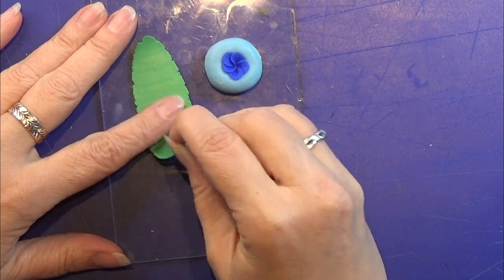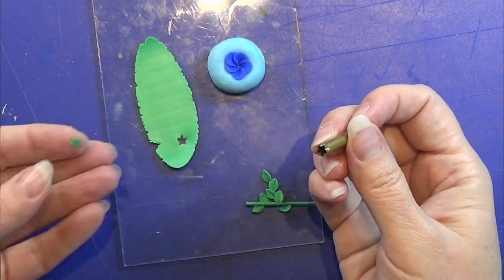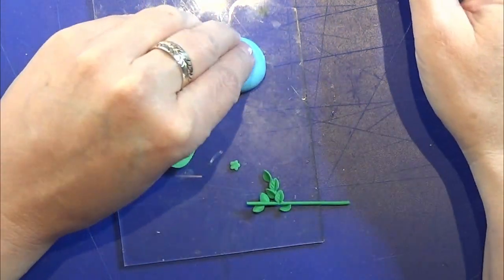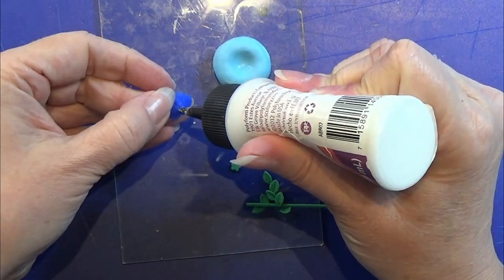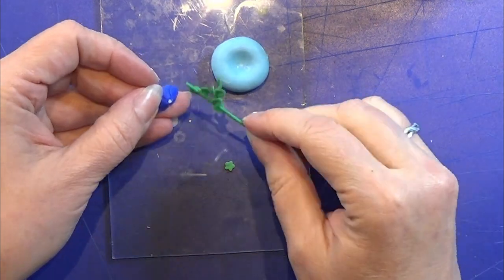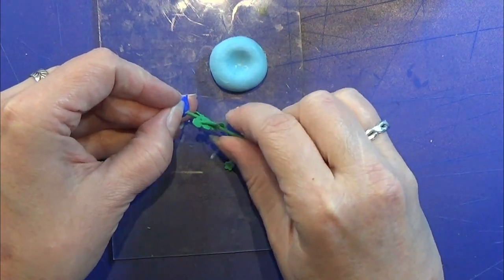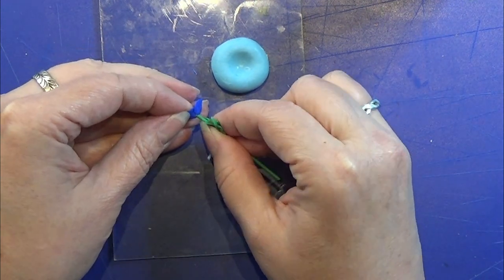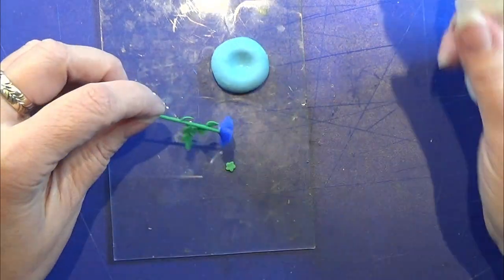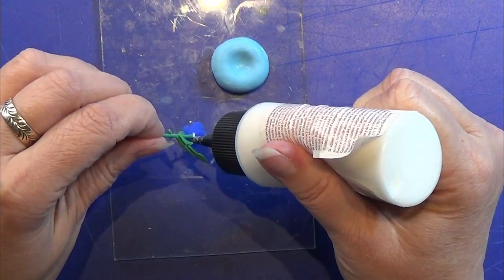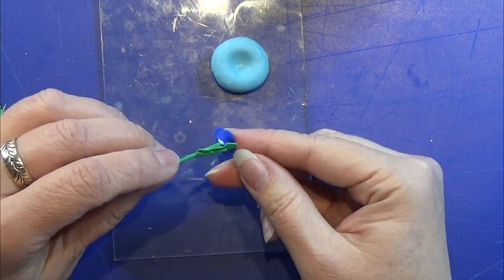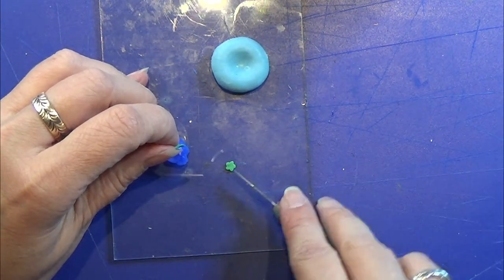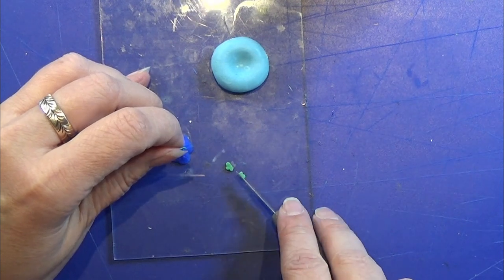I have this little flower cutter and I am going to cut one of these small flowers out that we are going to use on the back side of the flower. I am using a tiny bit of bake and bond to place the flower head onto the stem. There is a tiny hole between the petals of the flower where I can push my stem up.